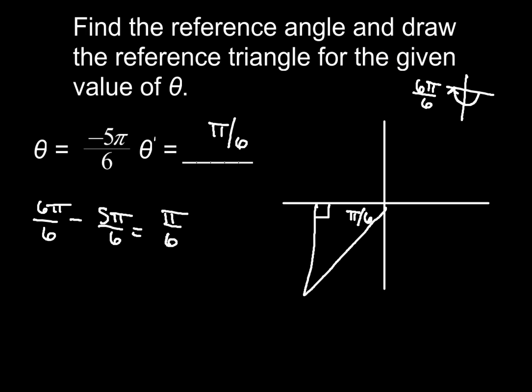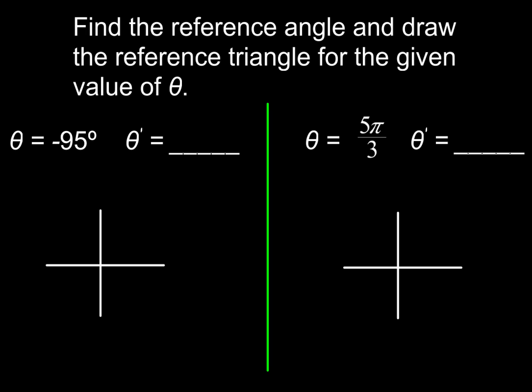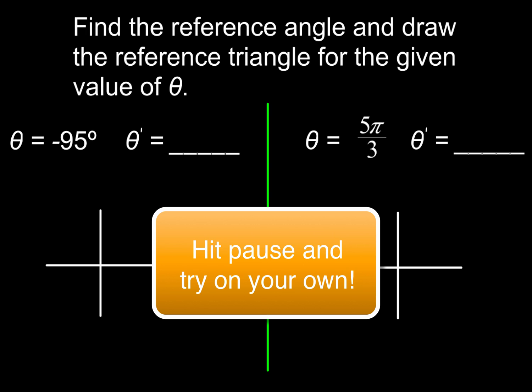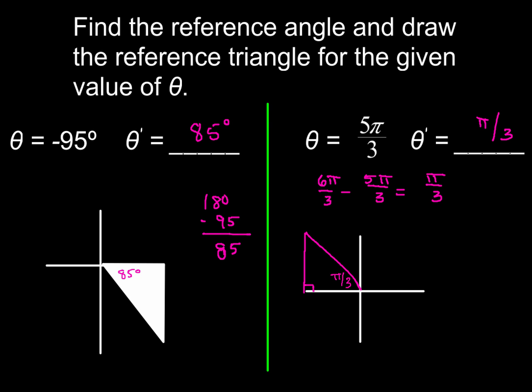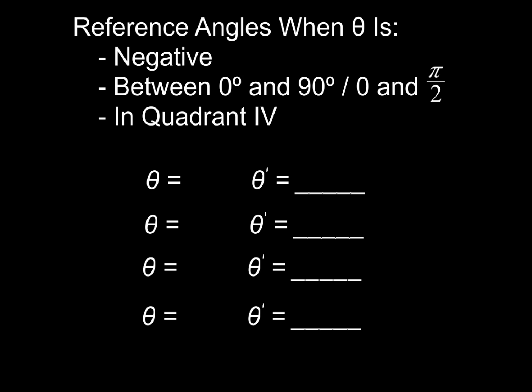Now of course, couldn't let you guys go without practicing two more to totally make sure that you have it down. So what I want you to do here, go ahead and find the reference angle and draw the reference triangle for each one of your given values of θ. Go ahead and hit pause now, and when you think you got it, come on back and let's see how you did. All right, rock stars, how'd you do? I'm sure you got this correct, so no big deal. Glad you guys are rocking this out. This should be pretty easy by now, as long as you can add or subtract. But there is one other caveat that I want to go over with you real quickly.